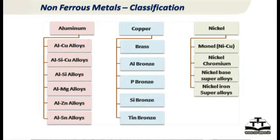The last major category of non-ferrous alloys is nickel-based alloys, most of which are called superalloys because they offer high strength combined with high-temperature performance. For example, nickel-chromium alloys are used in turbine blade applications, which need very high strength and must operate at very high temperatures. No other metal can withstand that kind of temperature and stress as well as a turbine blade superalloy.